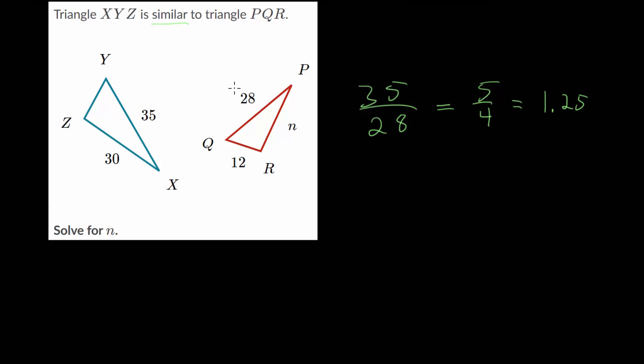So we figured out that to go from the smaller triangle to the bigger triangle, we are just multiplying by 1.25. And that will be true for all of the corresponding sides. To go from n, which is the middle length side, to 30, which is the middle length side on the bigger triangle, we will again multiply by 1.25.